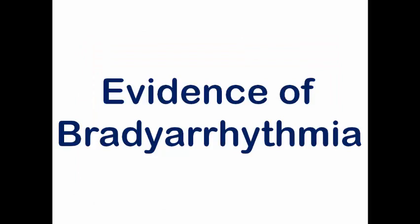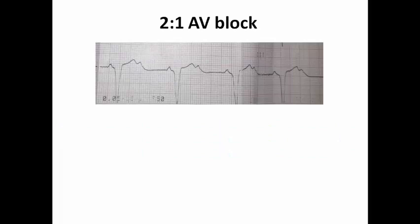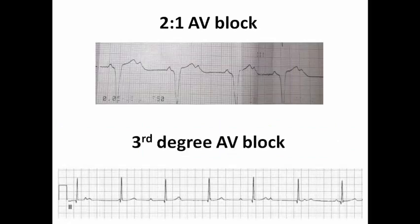The ECG while off symptoms may show evidence of bradyarrhythmia itself. For example, 2:1 AV block or third-degree AV block. In some cases the patient may be asymptomatic while this type of high-grade AV block is recorded, having developed syncope mostly due to sinus pause, or perhaps Adams-Stokes attacks due to insufficient escape rhythm. But at the time being the escape rhythm is sufficient, so the patient denies symptoms — and here the ECG has shown the final diagnosis.